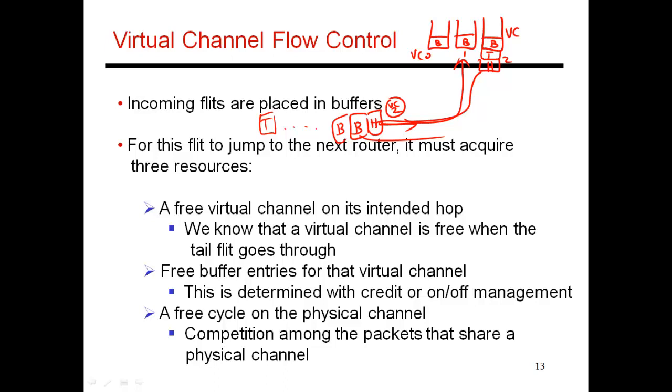So before a packet can hop from one router to the next, first, the first thing you have to do is acquire a virtual channel ID. Once that is done, that same virtual channel ID is used for all of your body and tail flits. Finally, when the tail flit goes through, it releases that virtual channel ID to be used by somebody else.